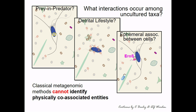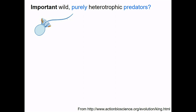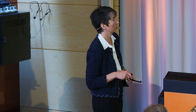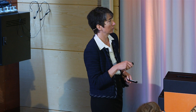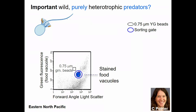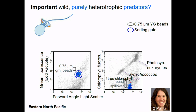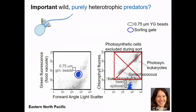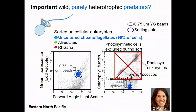Let's go out into the North Pacific and see what we can find. We're focusing on wild, purely heterotrophic predators, excluding chlorophyll. On the x-axis is forward angle light scatter, indicator of cell size, and we've stained for the food vacuole. Looking at chlorophyll fluorescence, these cells are truly off-scale. This is a sample from closer to shore with Synechococcus and photosynthetic eukaryotes — and when we exclude anything with chlorophyll, what we get — 99% of the cells by 18S rRNA sequencing — are uncultured choanoflagellates, plus one or two alveolates, a parasitic type, and a rhizarian.